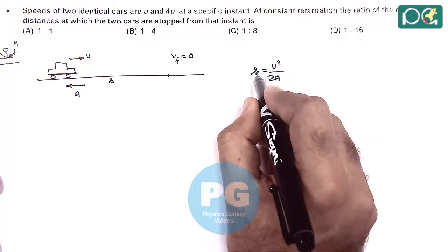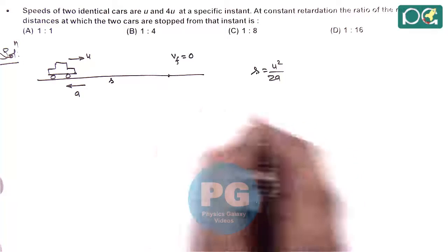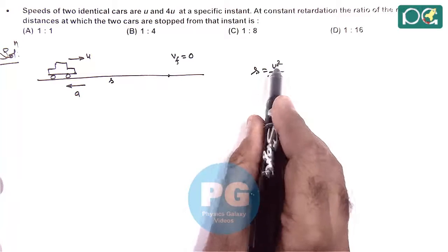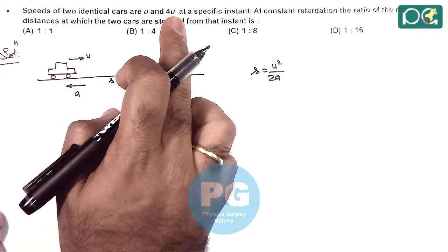So the distance covered by the car or any retarding body till it comes to rest is proportional to u square by a. As for the two cars which are having speeds u and 4u.